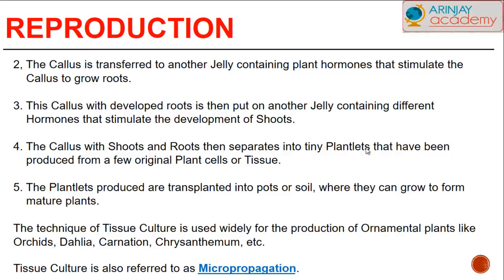The callus is transferred to another jelly containing more plant hormones that stimulate the callus to grow roots. This callus with developed roots is then put on another jelly containing different hormones that stimulate the growth of shoots. The callus, shoots, and roots then separate into tiny plantlets produced from a few original plant cells or tissue. The plantlets produced are transplanted into pots or soil where they can grow to form mature plants.